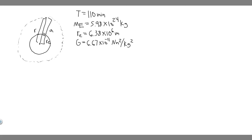In this problem, we're told an artificial satellite circling the Earth completes each orbit in 110 minutes. Part A: find the altitude of the satellite. Part B: what is the value of g at the location of this satellite?